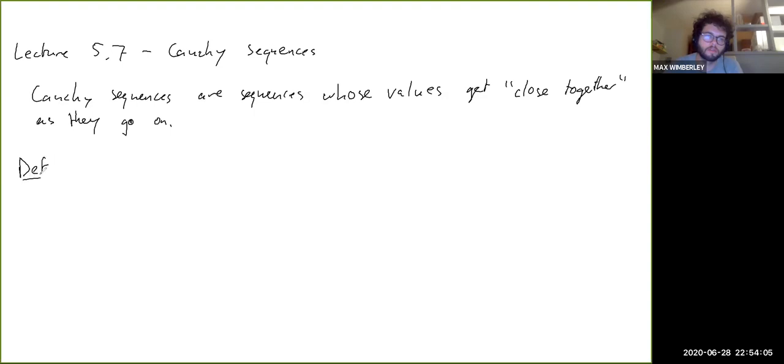So a sequence Sn is Cauchy if for all epsilon greater than zero...